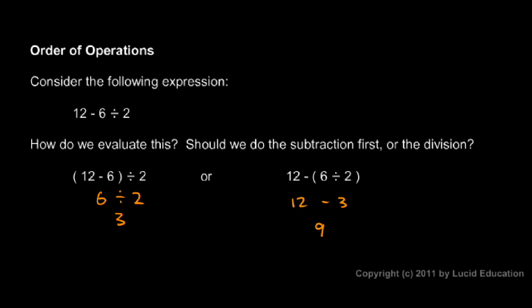The rules say we do division first. If we have parentheses, we do what's in parentheses first. But in the absence of parentheses, we do multiplication and division left to right, and then we do addition and subtraction left to right. That's the rule: multiplication and division come first — they get done before addition and subtraction.